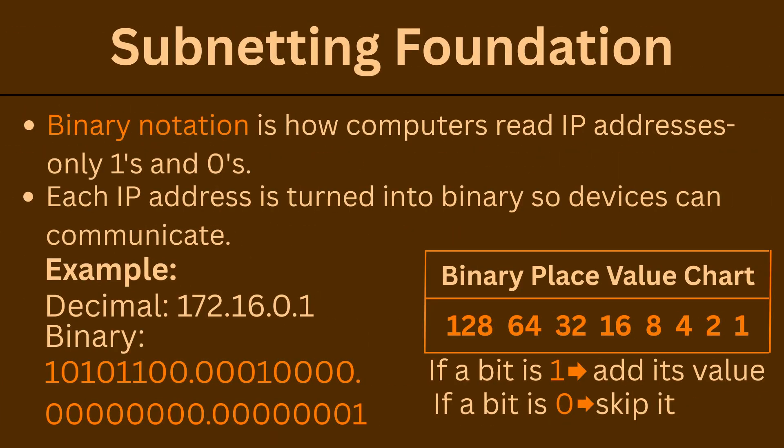Binary notation is how PCs communicate IP addresses, as opposed to dotted decimal. Binary notation is in the format of ones and zeros. Your binary place value chart goes above every octet in an address, starting from 128 to 1 from left to right. If a bit is indicated with a 1, you add its bit value; if a bit is indicated with a 0, you skip its value.